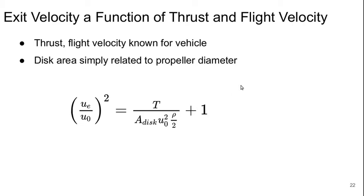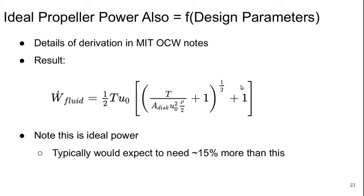We can think about it in terms of the power imparted to the fluid. This is also purely a function of the design parameters. This is derived from the MIT OpenCourseWare notes, but here's the result. The power to the fluid, W_fluid, is one-half times T times u_0, and then this expression for u_e over u_0 squared that we just had.